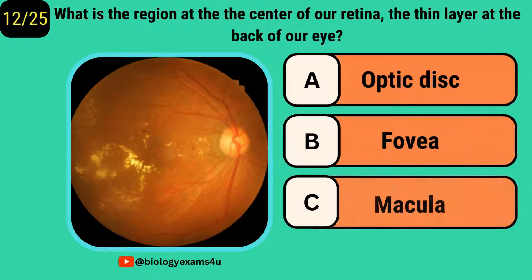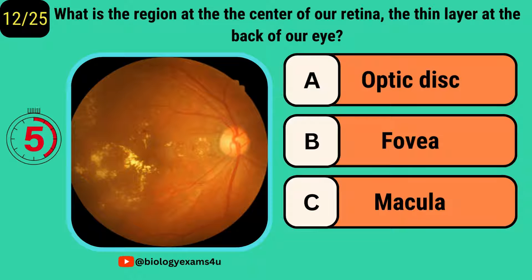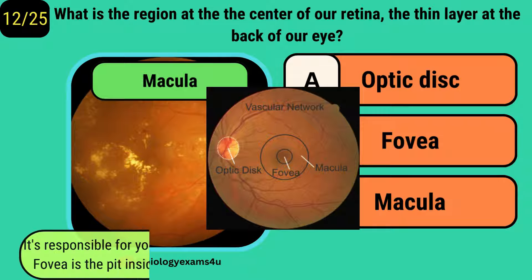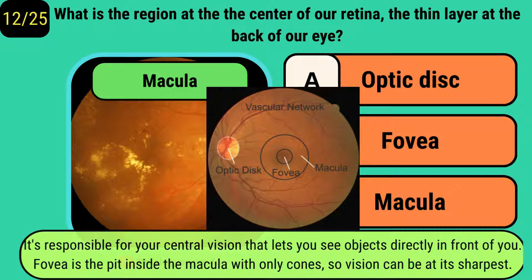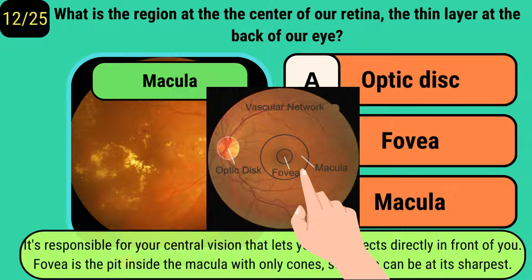What is the region at the center of our retina — the thin layer at the back of our eye? It is called the macula. It is responsible for our central vision, letting you see objects directly in front of the eye. The fovea is located within the macula and contains only cone cells, so vision is sharpest at the fovea.